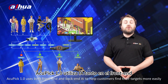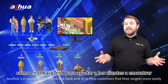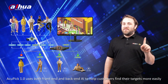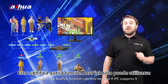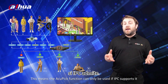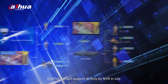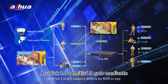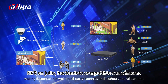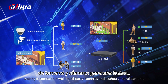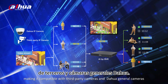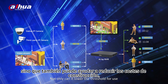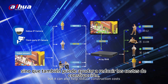Acupeg 1.0 uses both front-end and back-end AI to help customers find their targets more easily, meaning the Acupeg function can only be used if the IPC supports it. Acupeg 2.0 will support AI only by NVR starting in July, making it compatible with third-party cameras and Dahua general cameras. Not only can it lower thresholds for use, but it can also help reduce construction costs.